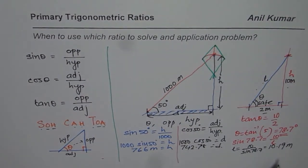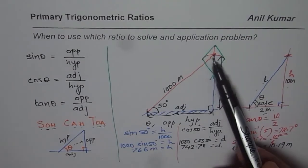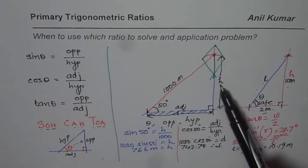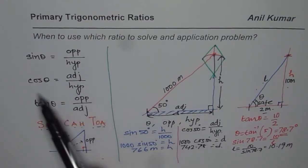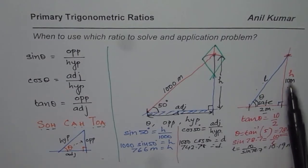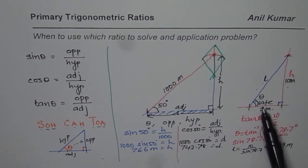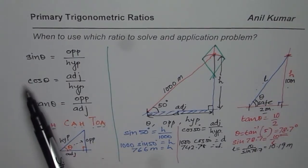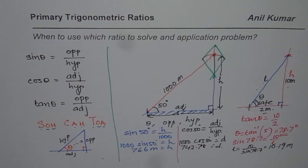So we learned that a combination of sine, cosine, and tangent may be used in application questions. Whenever the hypotenuse is involved, use sine or cosine depending on whether the opposite or adjacent side is needed. When height and horizontal distance are involved as opposite and adjacent sides, use tan theta. To find the hypotenuse, use sine or cosine again.